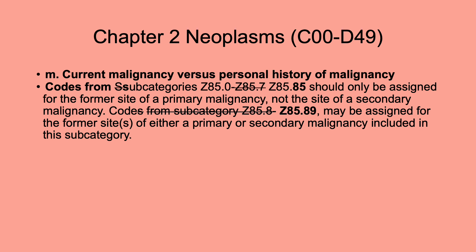Now Chapter 2. In the guidelines for Section M, the codes in the third paragraph were updated from Z85.0–Z85.8 to Z85.0–Z85.85 for current malignancy versus personal history of malignancy. Codes from subcategories Z85.0 to Z85.85 should be assigned for the former site of a primary malignancy, not the site of a secondary malignancy. The subcategory was also updated from Z85.8 to Z85.89 — more specific, as coding gets every year.